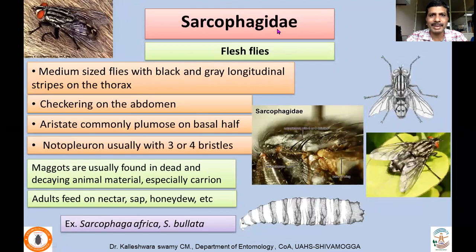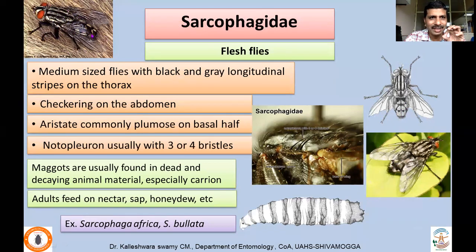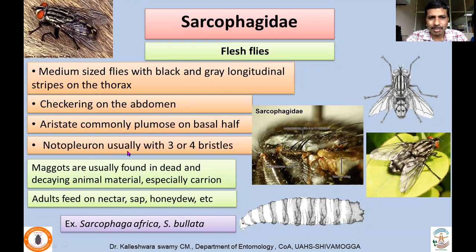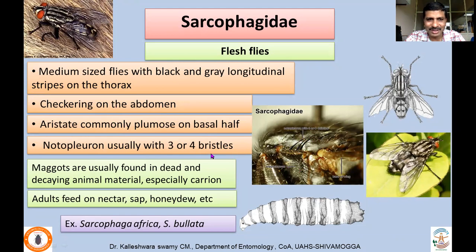Next, family Sarcophagidae — flesh flies. They are much bigger than house flies — medium-sized flies with black and gray longitudinal stripes on the thorax and a checkered silvery pattern on the abdomen. The arista is plumose on the basal half only. The notopleural region usually has three or four well-developed bristles. Maggots are found in dead and decaying animal material — they are carrion feeders. Adults feed on nectar, sap, and honeydew. Examples: Sarcophaga africa, Sarcophaga bullata.